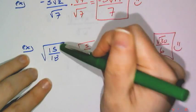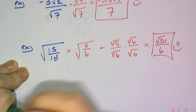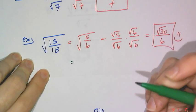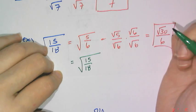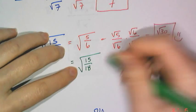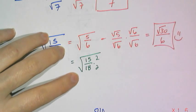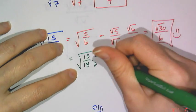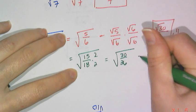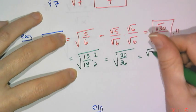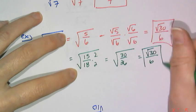And in this case, 15 over 18, you can actually, instead of scaling the fraction down, you can scale the fraction up so that it has a perfect square in the denominator. In this case, I can just scale it up by multiplying it by 2, and what I get is the square root of 30 over 36, and then when I split that, I get root 30 over 6.